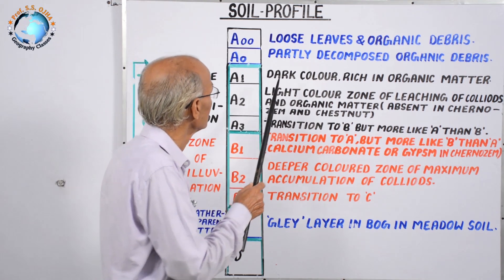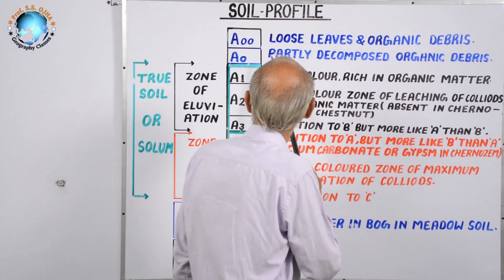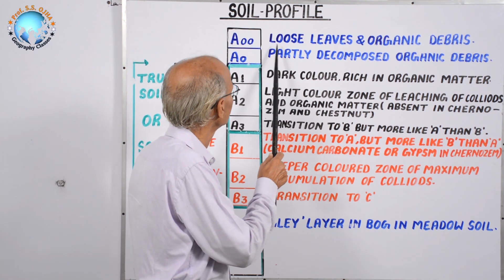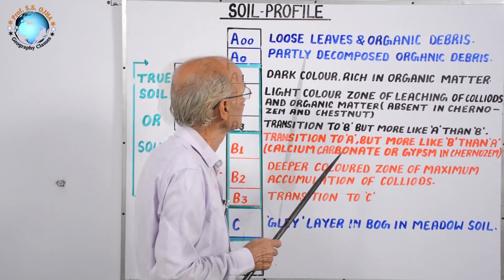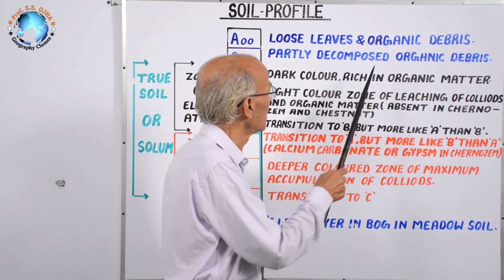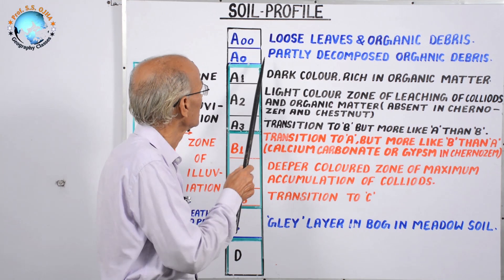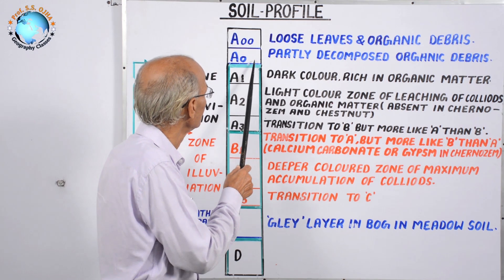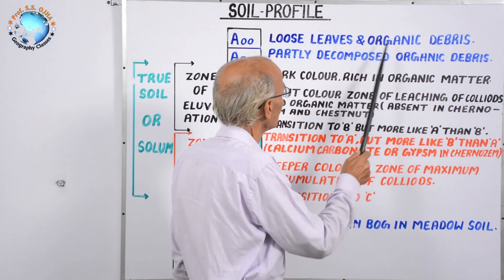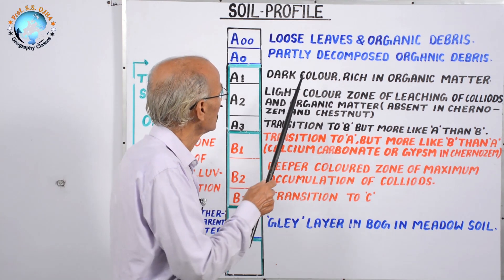A-double-zero stands for loose leaves and organic debris. If you travel on foot in a forested area or agricultural land, you find loose leaves, agricultural biomass, forest and grass leaves, and some organic material in the form of debris that is not completely decomposed, with some soil and mud mixed in. Below it lies A0, which is partly decomposed organic debris — the leaves and organic debris here are partly, not completely, decomposed, while A-double-zero had not decomposed at all.